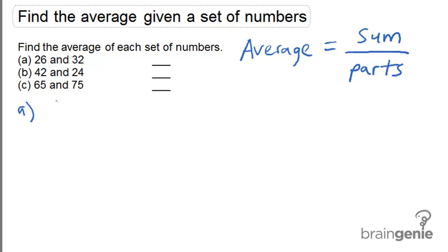If we look at example A, the sum of 26 and 32 comes out to 58. Since there are two numbers, or two parts, we divide 58 by 2, and we're left with an average of 29.